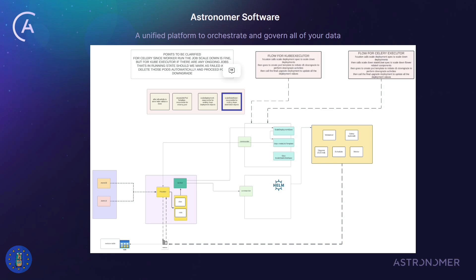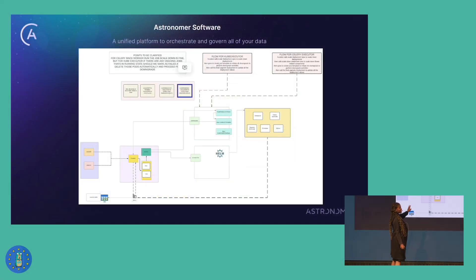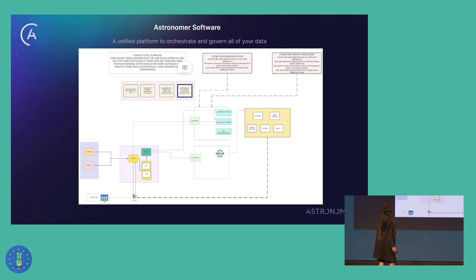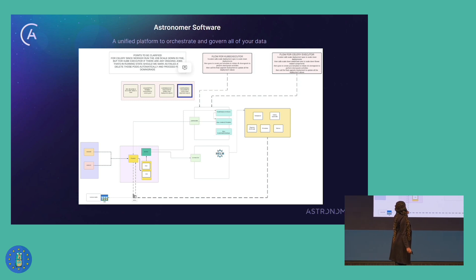This is what the software looks like. We have the clients, which is the Astro CLI — that's the CLI and the UI. We have the API, which we call Houston. Our API communicates to what we call the worker through our NATs. And then there is the Commander, which is what this talk will be based on, because the Commander is how we integrate with our infrastructure.